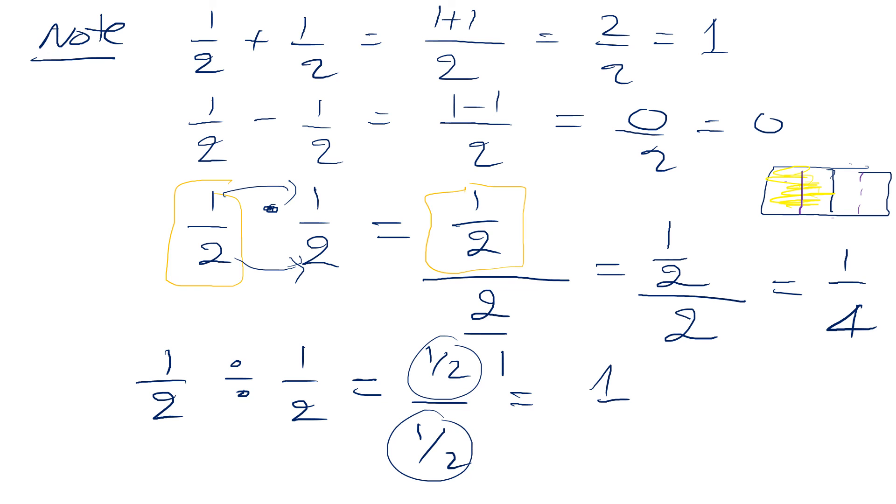So does this match the rule? Alright, let's see. 1 half times, you know, keep change flip. We multiply by reciprocal, and that's 2 over 2, which is 1. So yes, it does confirm that everything that is discussed here is perfect.